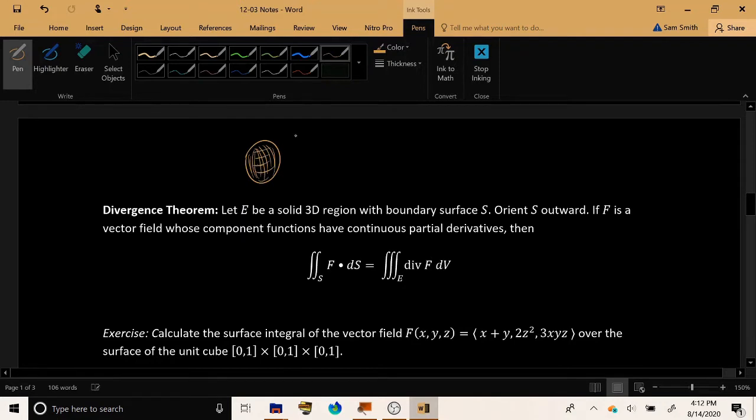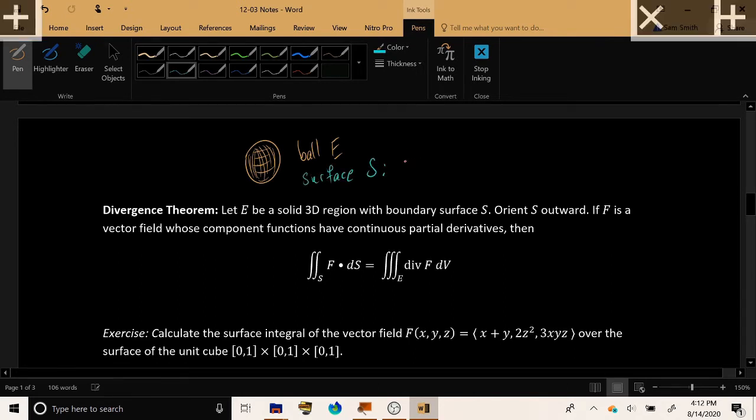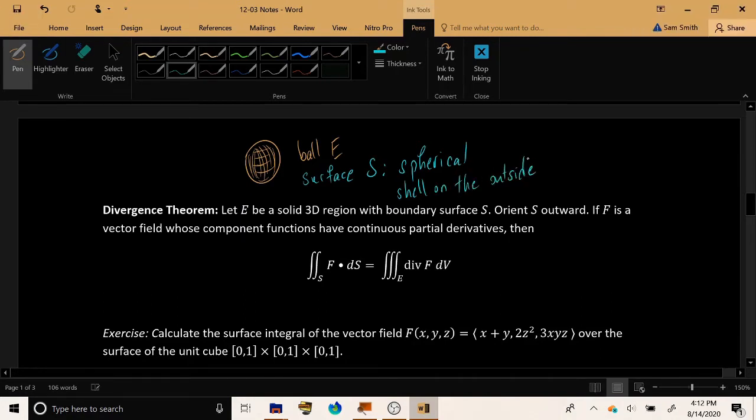And then you have the boundary surface S. So if you have a ball E, then the surface S would be the spherical shell on the outside. That's what we mean when we refer to the boundary surface. It'd be the spherical shell just on the outside of this ball.